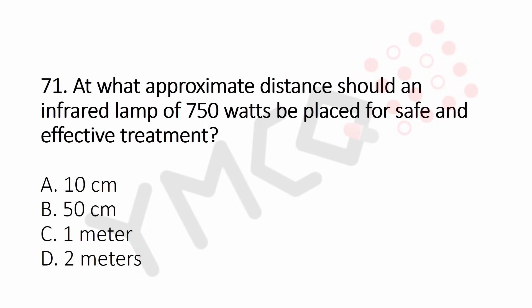Question number 71: At what approximate distance should an infrared lamp of 750 watts be placed for safe and effective treatment? Option A, 10 centimeters. Option B, 50 centimeters. Option C, 1 meter. Option D, 2 meters. And the answer is Option C, 1 meter.